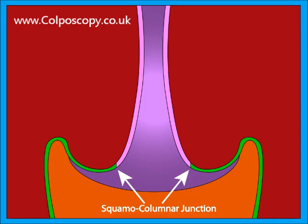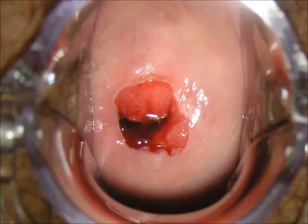And this is what it looks like in real life, with the whiter cells on the outside — squamous — and the red cells — columnar.